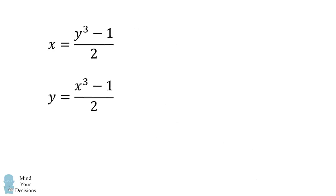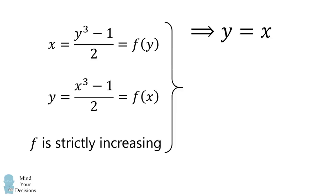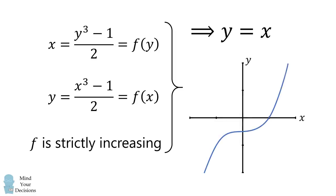Now we'll notice an interesting symmetry. x is equal to y cubed minus 1 all over 2, which is a function of y. And y is equal to x cubed minus 1 all over 2 — that's the same function f of x. Since x cubed is a strictly increasing function, f is a strictly increasing function. These conditions will imply that y is equal to x. We can see this graphically: we can plot f of x and f of y, and notice where the two curves intersect is exactly along the line y equals x.